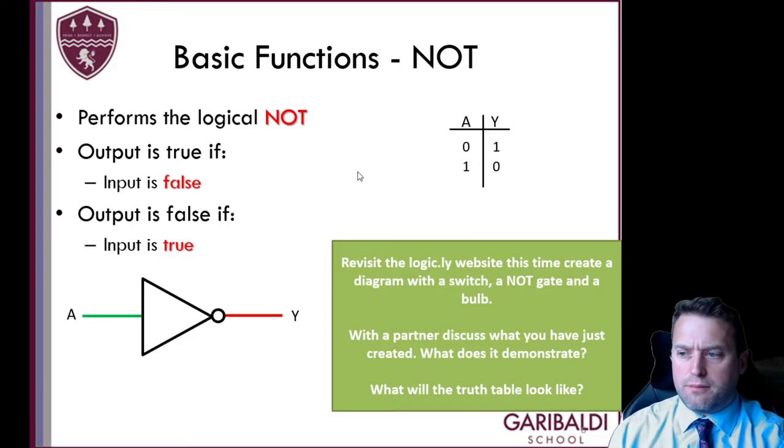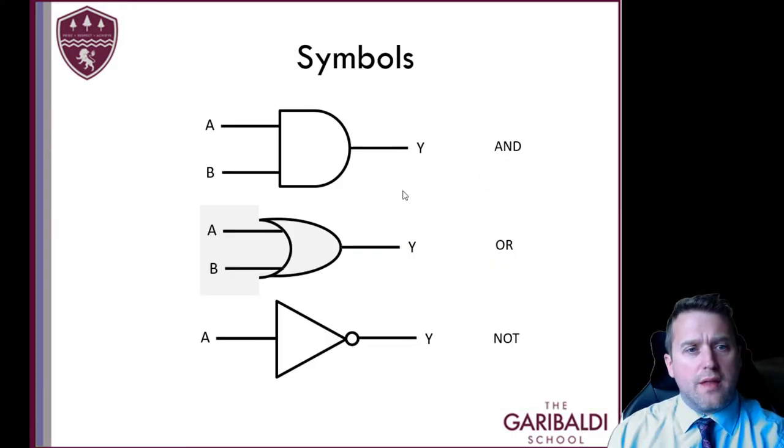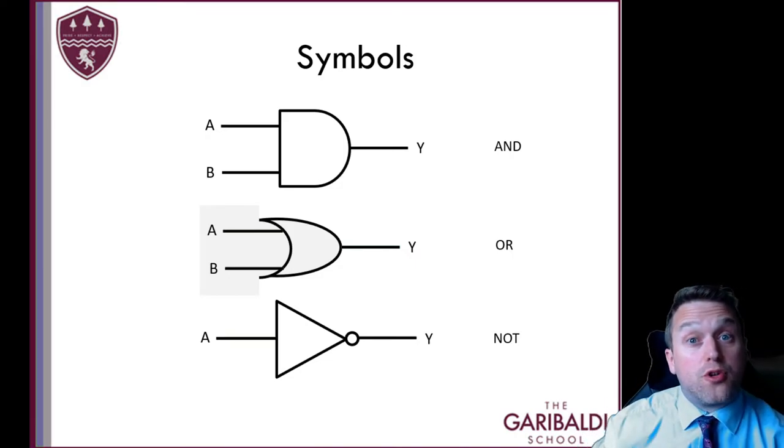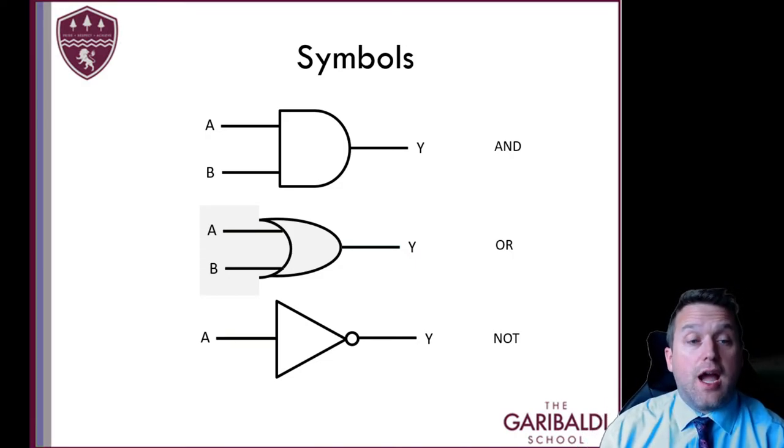So there's our three gates. That's what they look like. Remember what they look like. You need to be able to identify them by sight. And you need to know how they behave, as in the truth tables of all three, when they come off and when they go on.